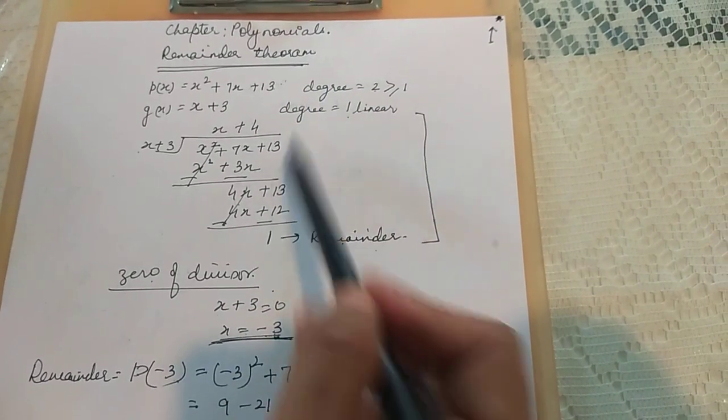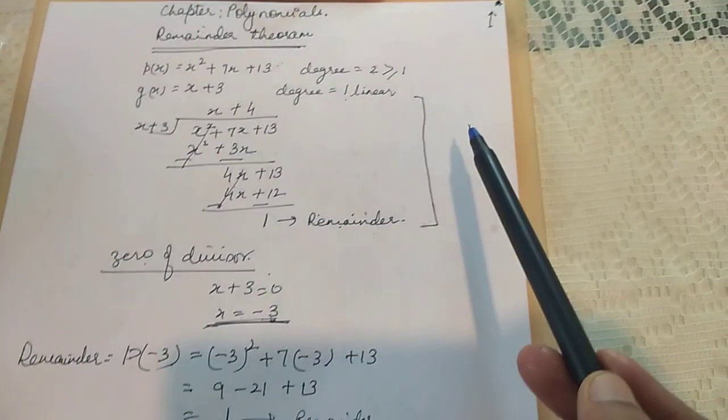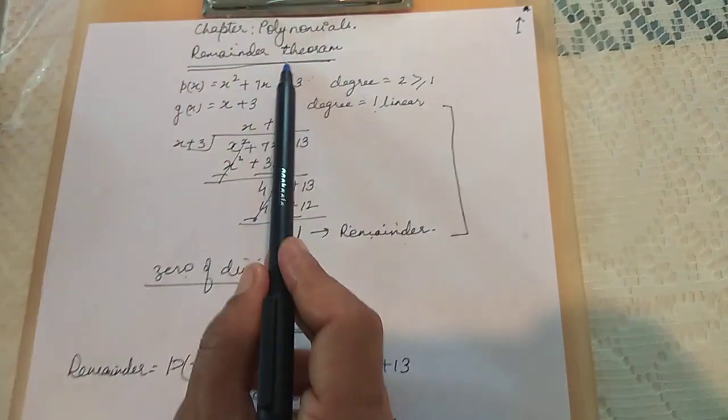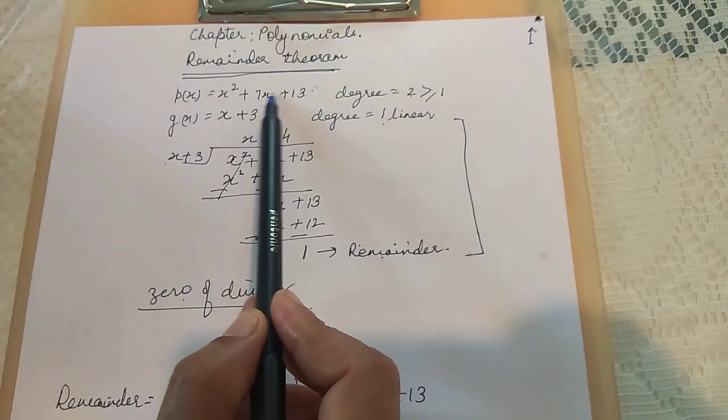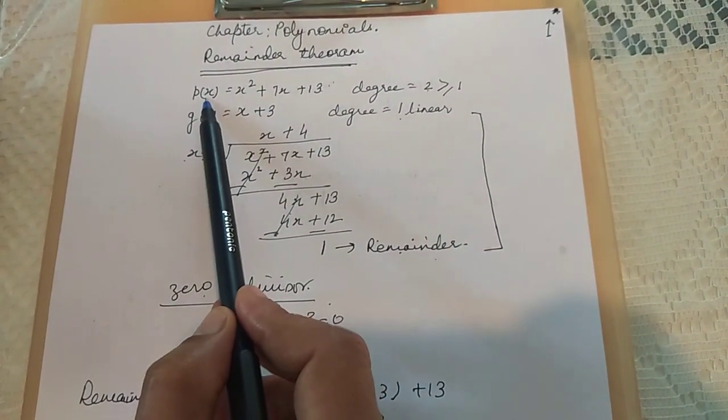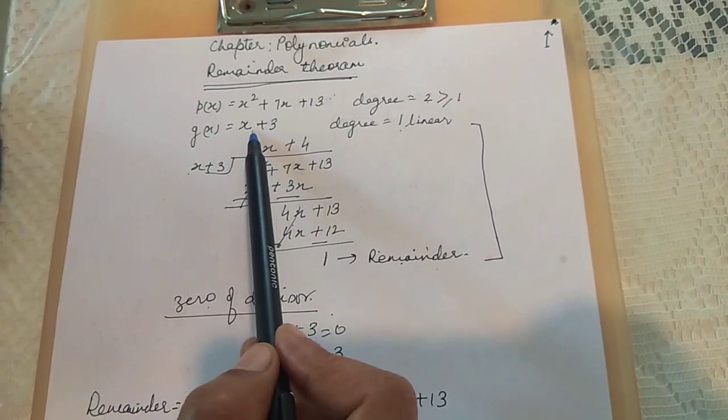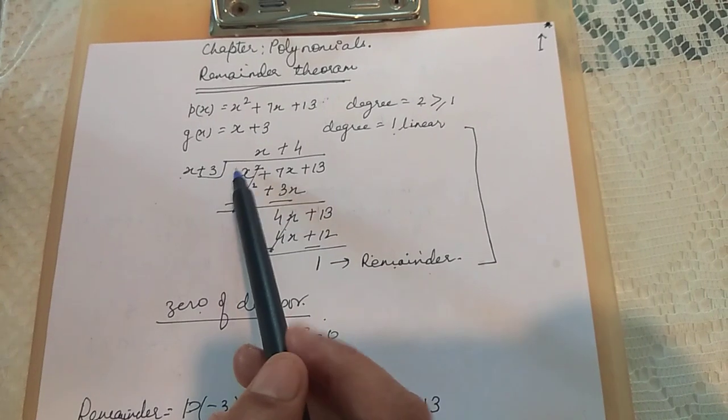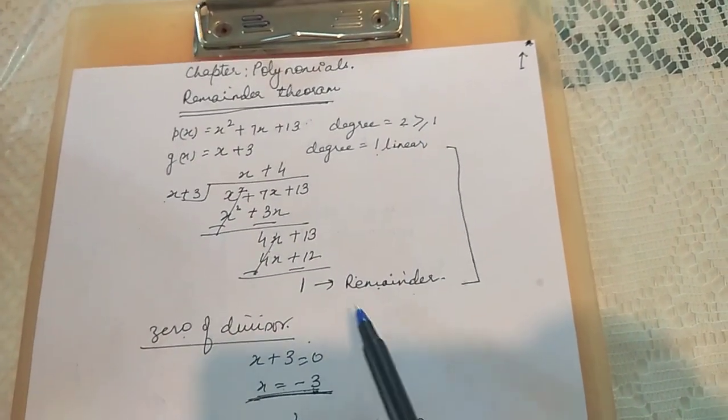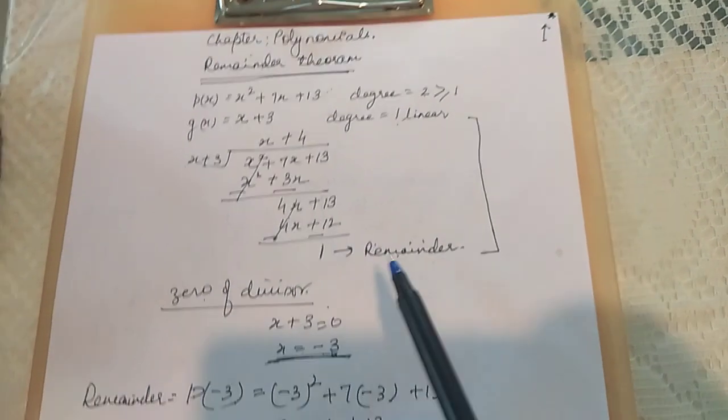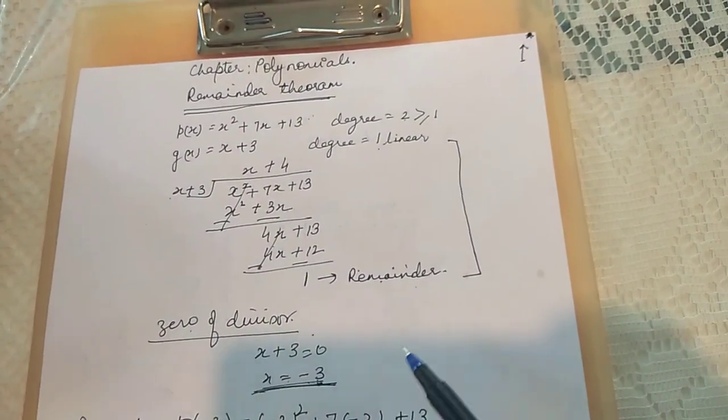I will just give a quick reminder of the remainder theorem. Let's revise. The remainder theorem says that if a polynomial p(x) is divided by another polynomial which is linear, then we obtain a remainder without actually going for the long division. So let me first revise the long division and then we will take the remainder theorem.